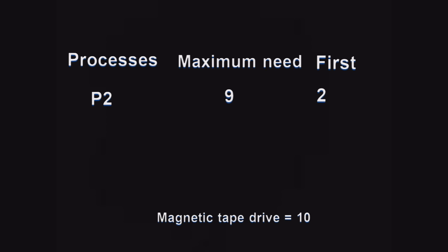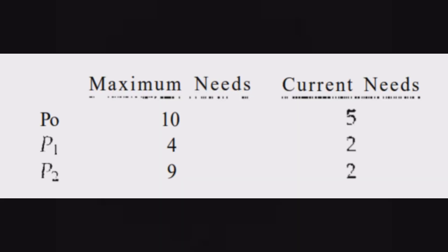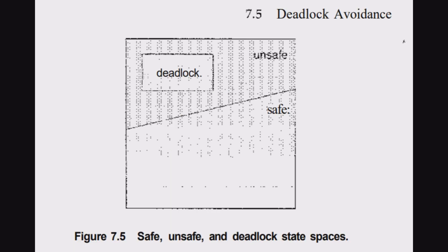This is called a safe state. Let us look at the unsafe state: instead of allocating two more tape drives to P1, if we allocate three drives to P2, the processes will become stuck — not a single process will be able to execute. This is called deadlock. So in an unsafe state, there is a possibility of deadlock.